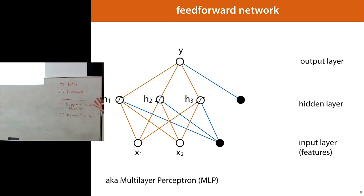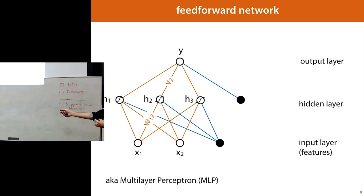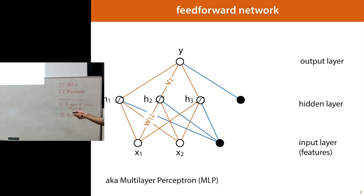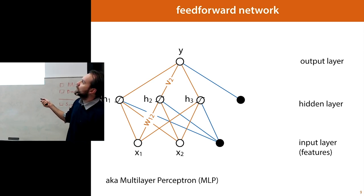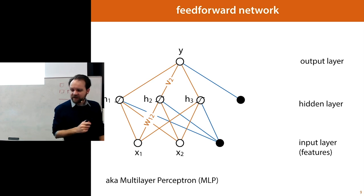It's just a name for the basic neural network. For the naming convention of weights: weights in the first layer we call W, indexed first by the node they come from, then the node they go to. So the weight from input node x1 to hidden node h2 is W12. For the output layer with one output node, we just use a single index for the V weights.